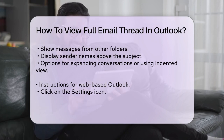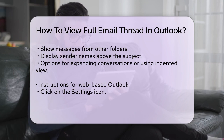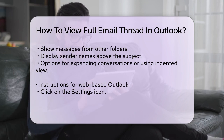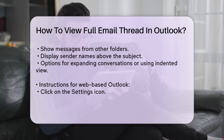For those using the web-based version of Outlook, the process is similar. Click on the Settings icon — it looks like a sprocket at the top right corner of the screen. Under Arrange Message List, select Group into Conversations.